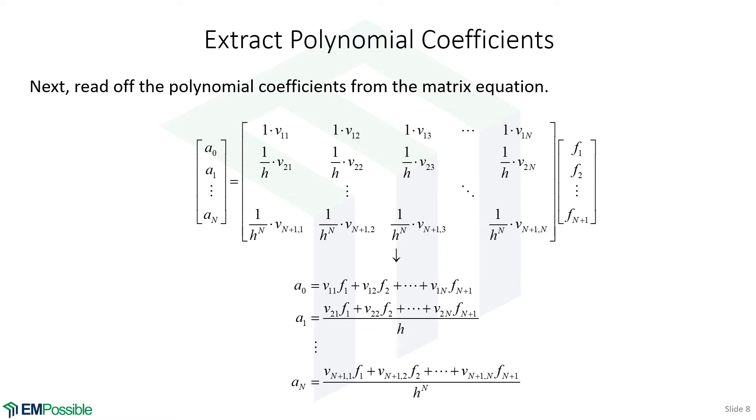Let's fill in the steps. We extract our polynomial coefficients by multiplying this top row by the column vector of F's, giving us our A₀ polynomial coefficient. We multiply the second row by our column vector of F's for the A₁ polynomial coefficient, and so on. We can read off all our polynomial coefficients.